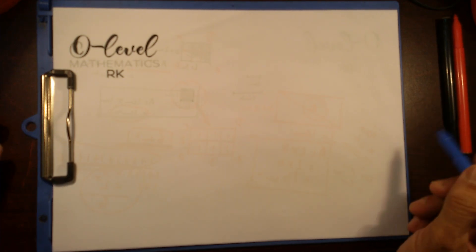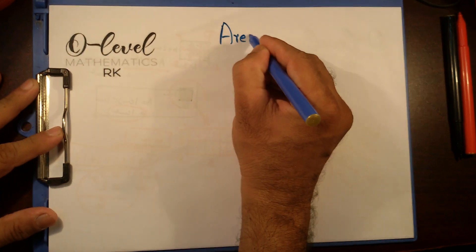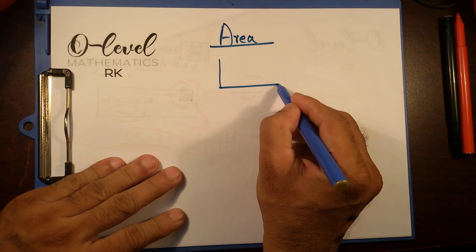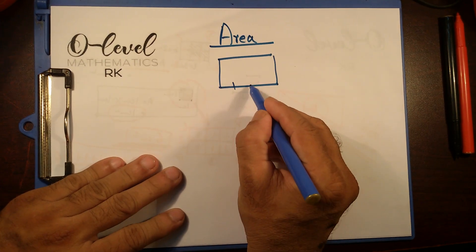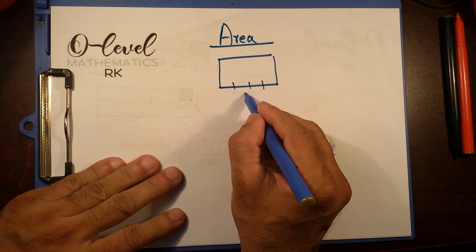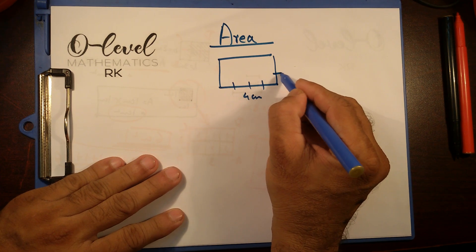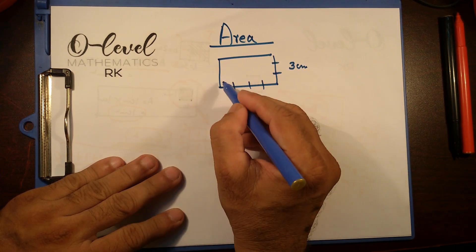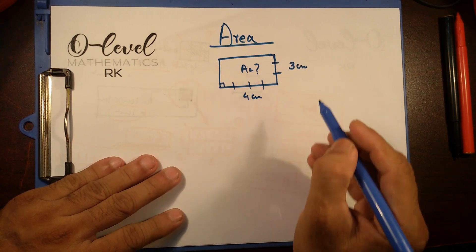Good morning students. On today's lecture I'll talk about area. What do you understand by area? I have a rectangular space given. This side is 1, 2, 3, 4 — that's 4 cm. And over here is 1, 2, 3 — that's 3 cm. This is a rectangle. What would be the area of this rectangular shape?